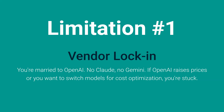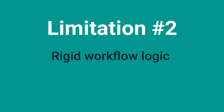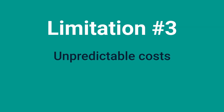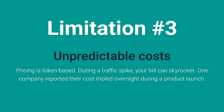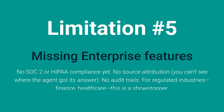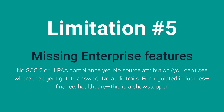Now let's talk about what nobody's saying in the hype cycle. Limitation one: vendor lock-in — you're married to OpenAI, no Claude, no Gemini. If OpenAI raises prices or you want to switch models for cost optimization, you're stuck. Limitation two: rigid workflow logic — Agent Kit doesn't have autonomous routing; building a simple weather agent requires six-plus nodes, whereas N8N does this in two nodes with agent autonomy. Limitation three: unpredictable costs — pricing is token-based, and during a traffic spike your bill can skyrocket; one company reported costs tripling overnight during a product launch. Limitation four: not ready for non-developers — despite the drag-and-drop UI, you still need to understand API integrations, workflow logic, and security best practices. Limitation five: missing enterprise features — no SOC 2 or HIPAA compliance yet, no source attribution, no audit trails. For regulated industries like finance and healthcare, this is a showstopper.